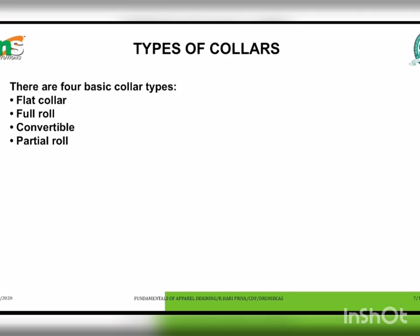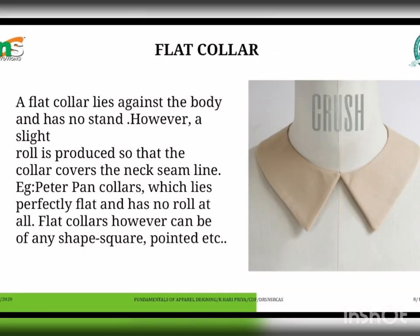First, the flat collar. A flat collar lies against the body and has no stand; however, a slight rolling is produced so that the collar covers the neck seam line. An example is the Peter Pan collar, which lies perfectly flat and has no roll at all. Flat collars can be of any shape — square or pointed.